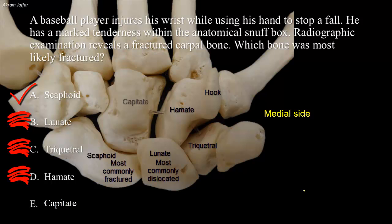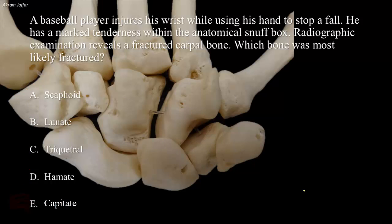The capitate is the largest bone in the carpus. It is the third bone in the distal row of carpal bones and is located away from the anatomical snuff box. It is less likely to be fractured.